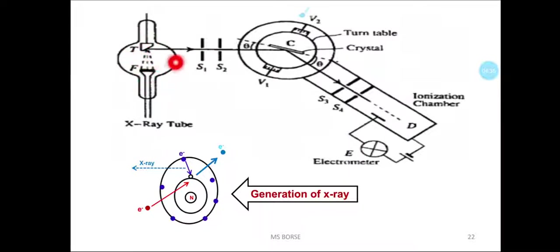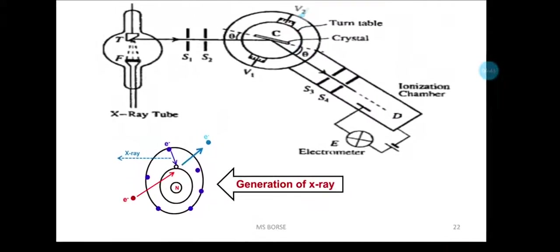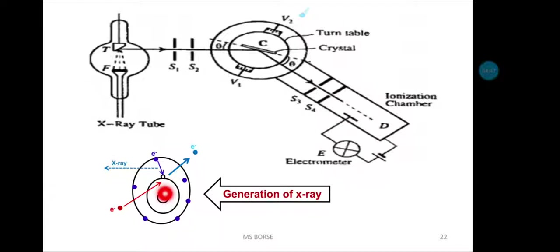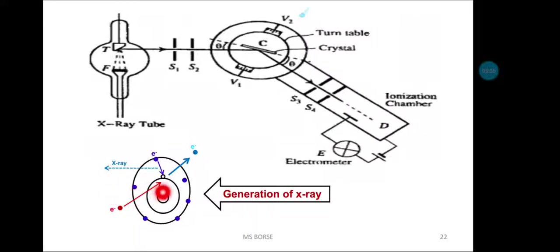High-voltage electrons are bombarded onto the metal plate, and these electrons are responsible for generating X-ray radiation. Here is how the process works at the atomic level. Consider the atom of iron — at the center is the nucleus containing protons and neutrons, with electrons revolving in orbits. When the high-voltage electrons collide with the metal, they cause the innermost electrons to escape, creating a vacancy in the innermost orbital.